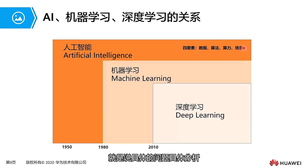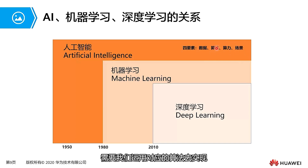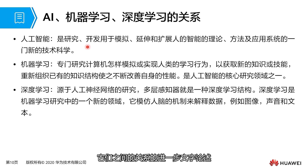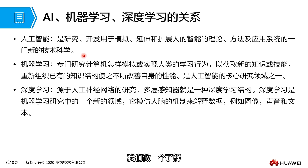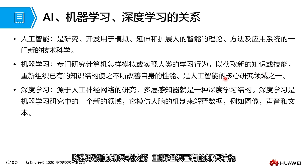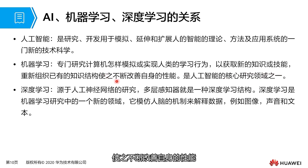For specific issues in a given scenario, we apply the corresponding algorithm to achieve the goal. Machine learning is specifically dedicated to studying how computers simulate or achieve human learning behavior — acquiring new knowledge or skills, reorganizing existing knowledge structures, and continuously improving performance. It is one of the core research areas of artificial intelligence.